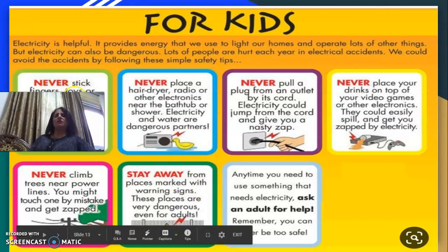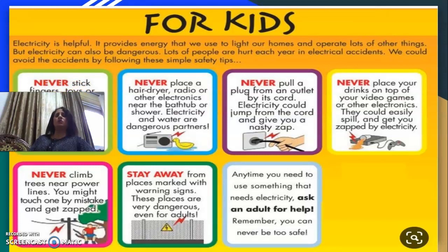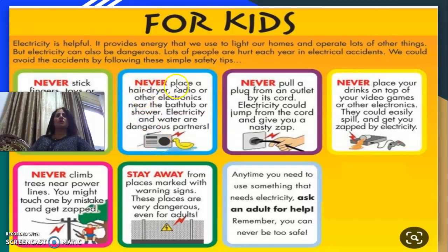Rule one: Never stick fingers, toys, or other objects into an electrical outlet — you might be hurt by electricity. Rule two: Never place a hair dryer, radio, or other electronics near the bathtub or shower — electricity and water are dangerous partners.